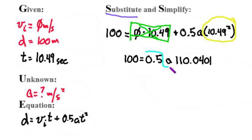I get 100 equals 55.02005 times a. In order to get a all by itself, I'm going to divide the right-hand side by 55.02005, and these things cancel.